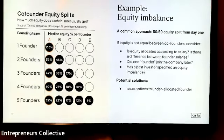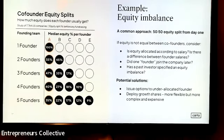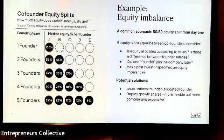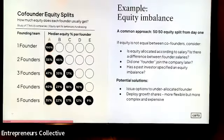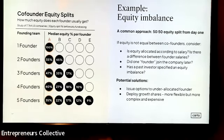If there is an equity imbalance, rather than issuing more equity you can give options to an under-allocated founder to provide more incentive to stay in the business. There are also growth shares in the UK, which are a more flexible way of giving out shares, but more complex and expensive — probably not the most relevant for first-time founders.